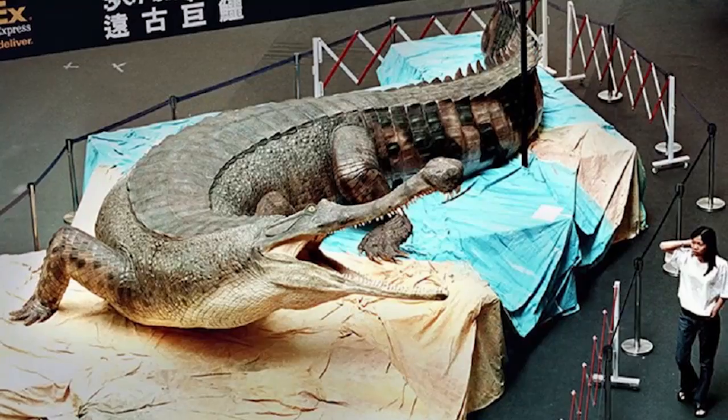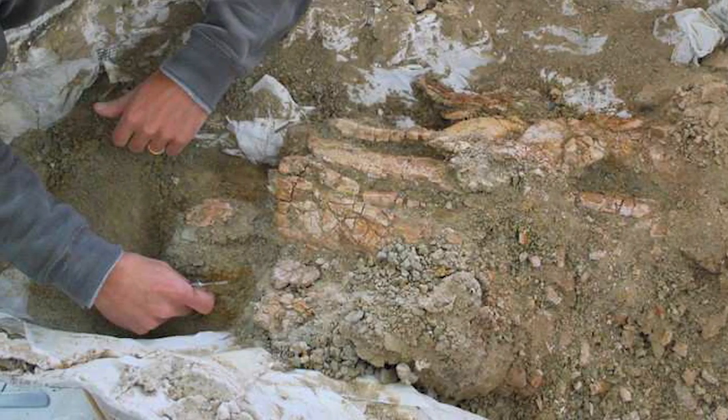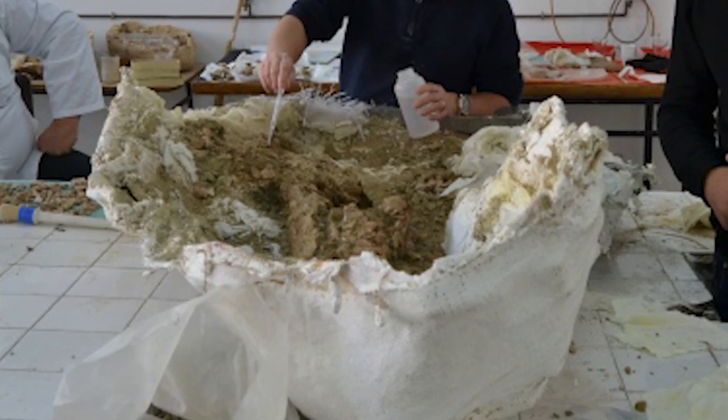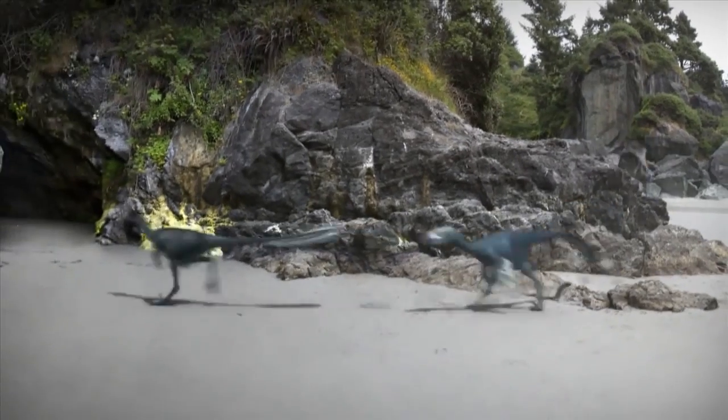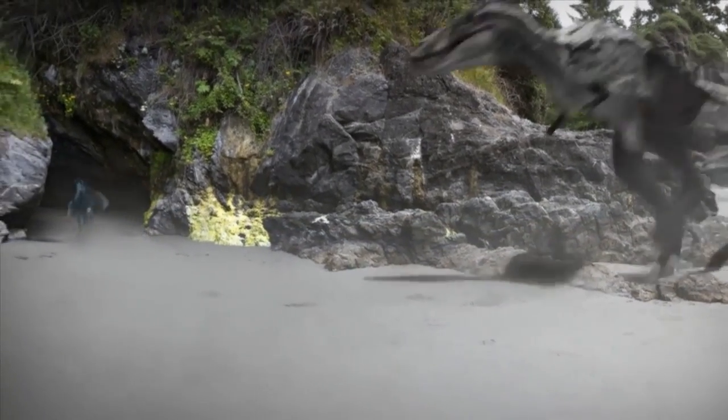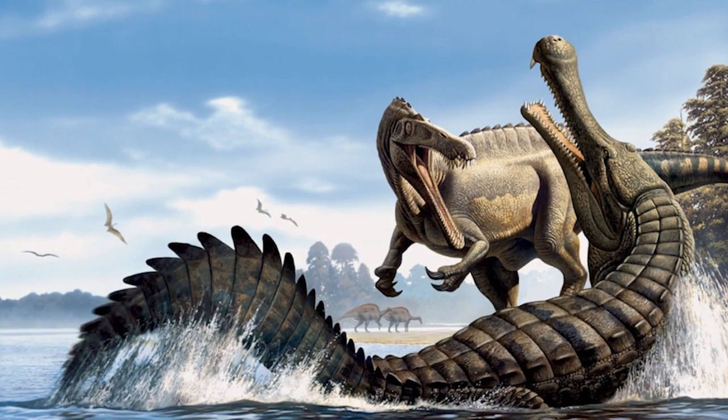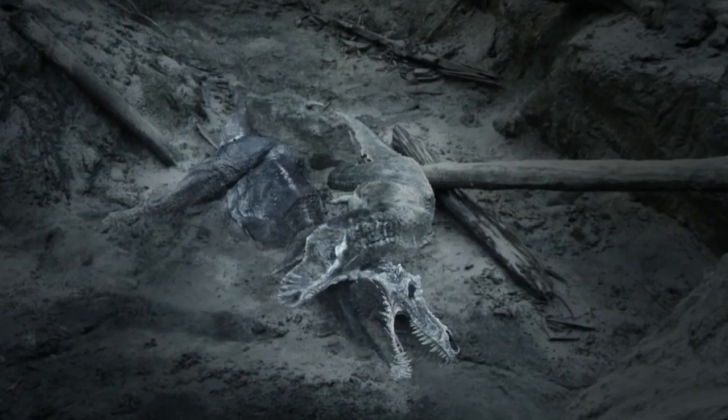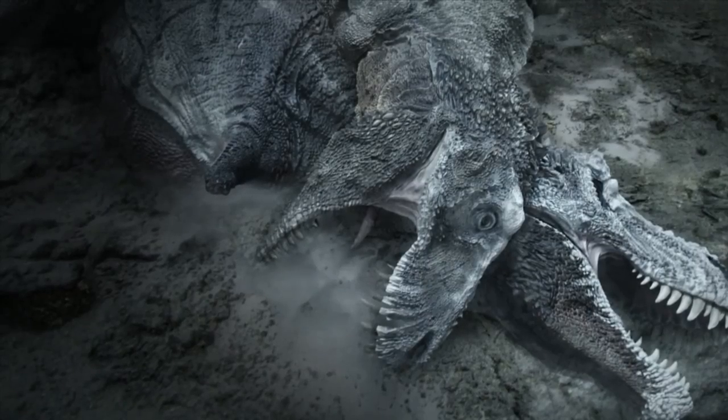But upon closer study, the scientists discovered that the dinosaur's remains were around 130 million years old. Now, this species was believed to have died out over 145 million years ago. So the Machimosaurus Rex somehow survived 15 million years after scientists believed it had died out.